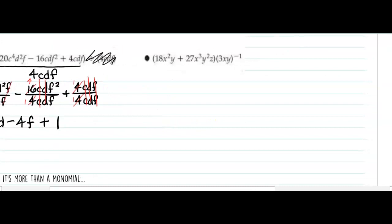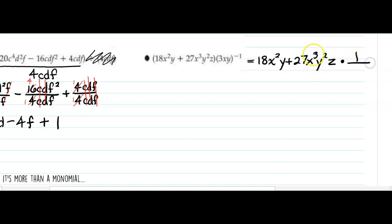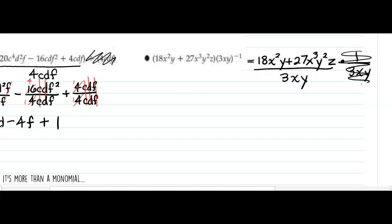A little bit of new notation again. Remember, a negative exponent just means we take the first polynomial and multiply it by 1 over 3xy, because anything to the negative power we want to move to the denominator. And this is the same thing as dividing like this — which is the same thing as taking each piece of the numerator, since it's a binomial, and dividing by the denominator, which is a monomial.